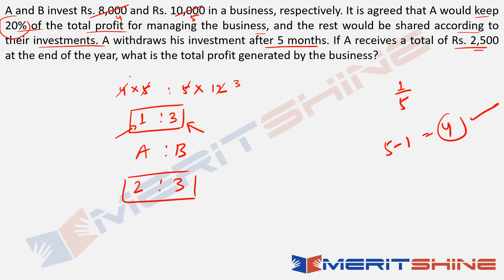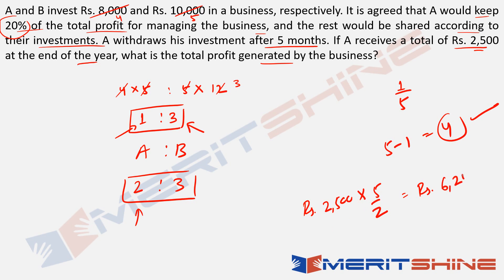A receives a total of Rs. 2,500 at the end of the year. This Rs. 2,500 is because of both factors — his investment and his work. This represents 2 units out of 5. So total profit = 2500 × (5/2) = 1250 × 5 = Rs. 6,250. You can do it in multiple ways, but the direct approach is best: once you get 1 to 3, quickly arrive at 2 to 3 because 20% is 1/5, 4 units are left, and 1+3=4 is apparent right away.